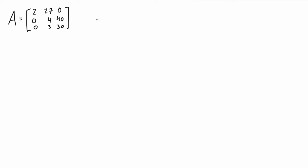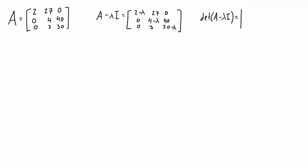When we first get started we need to write what the matrix A minus λI is. We just multiply λ to the identity matrix and then subtract that. That's why we're seeing this subtraction of λ along the main diagonal of the matrix. Once we have A minus λI, we want to set it up so we can take the determinant of it.